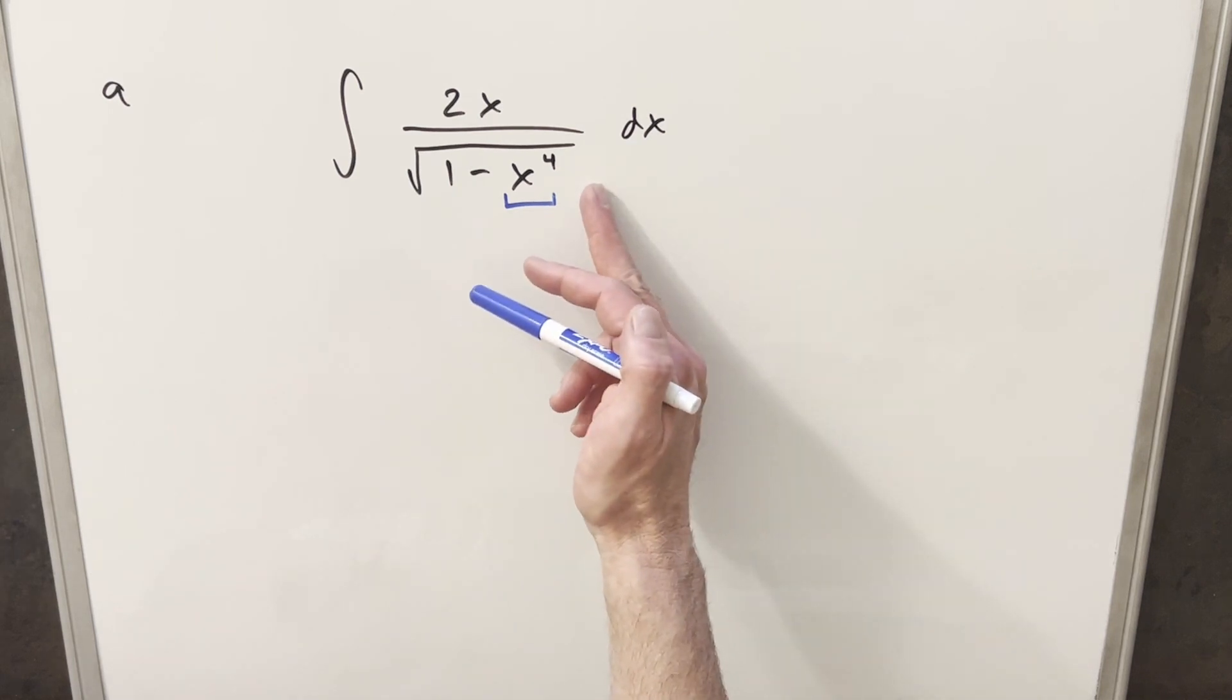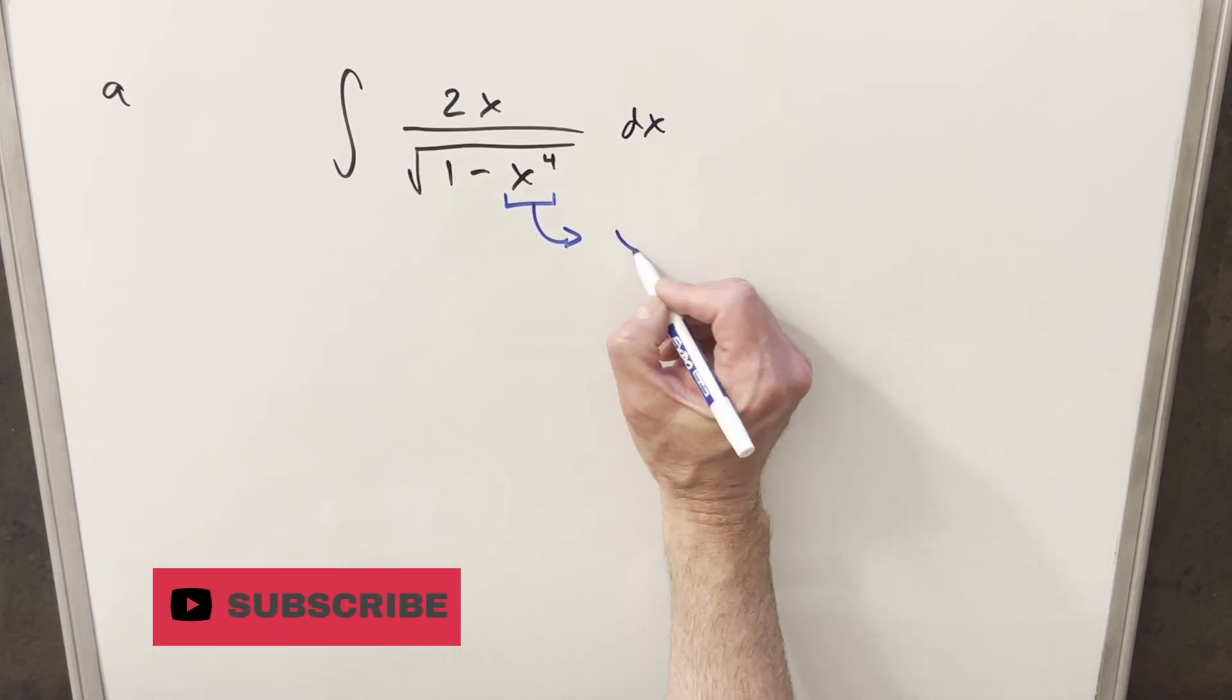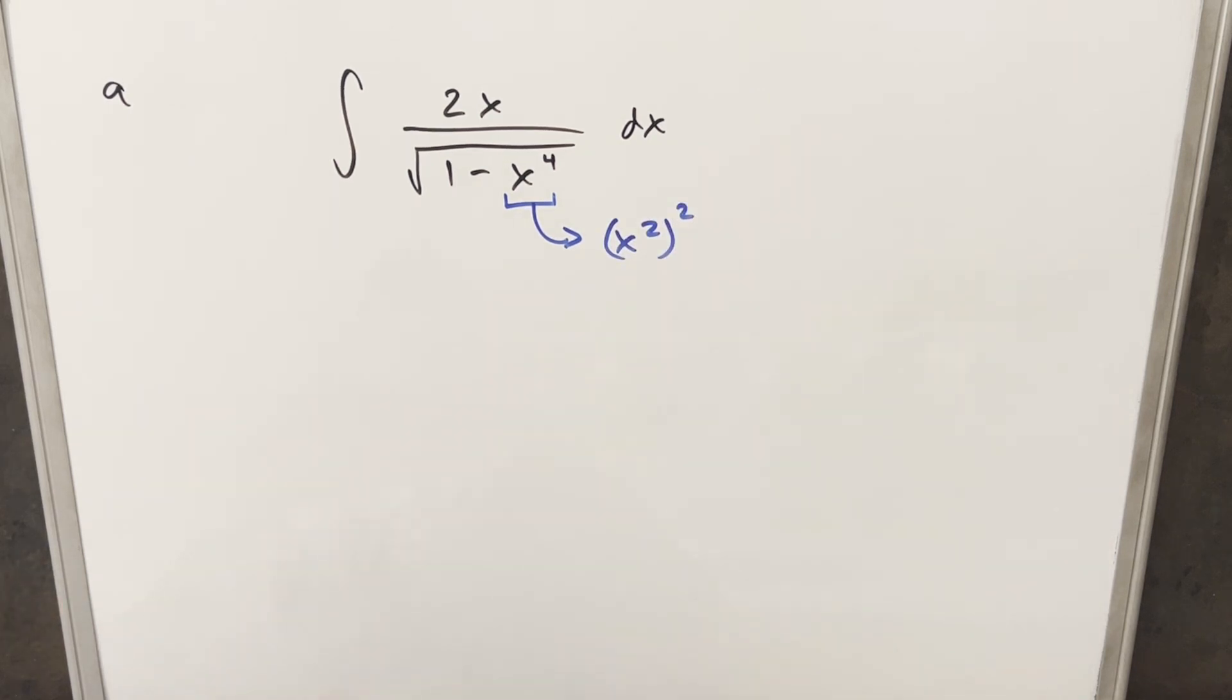But when the exponent's not 2, we can kind of force it to happen. In this case, I can just write it as x squared all squared. When we do that, we're perfectly set up for a u substitution, because the derivative of x squared is going to be 2x dx right there.